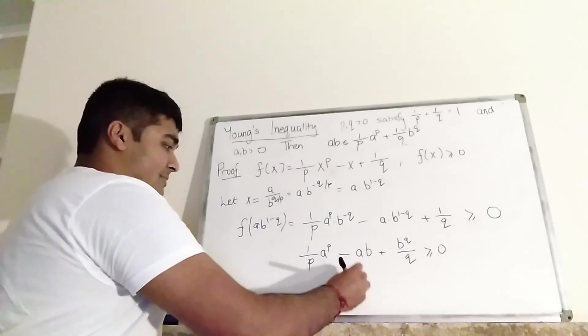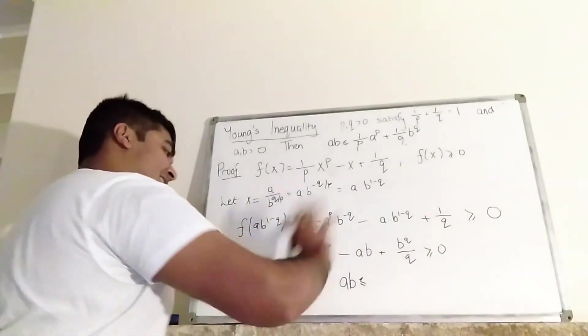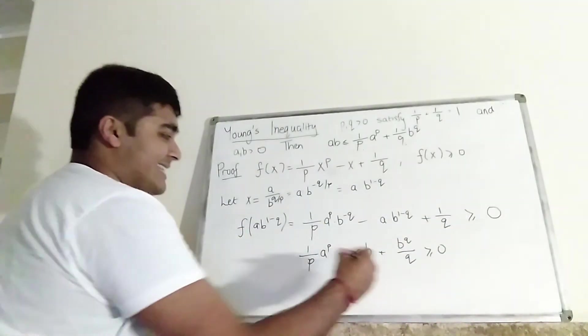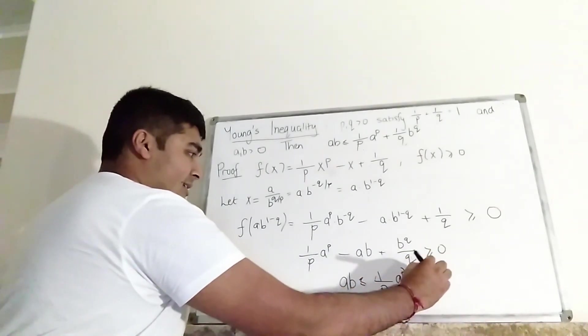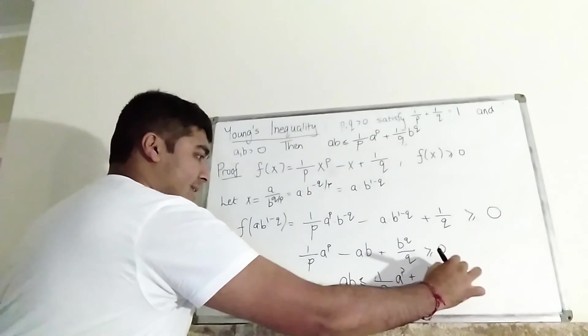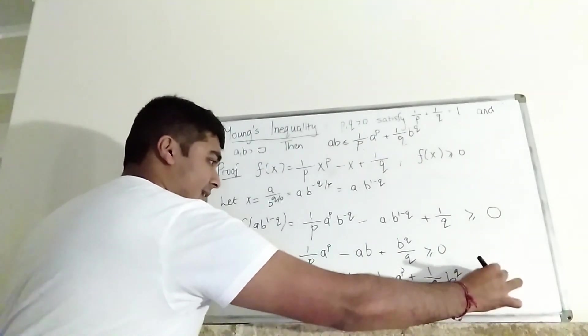OK, so adding A, B to both sides and sort of bringing this side onto the left-hand side. A, B is less than or equal to 1 over P, A to the P plus 1 over Q, B to the Q. And that is the end of the proof.